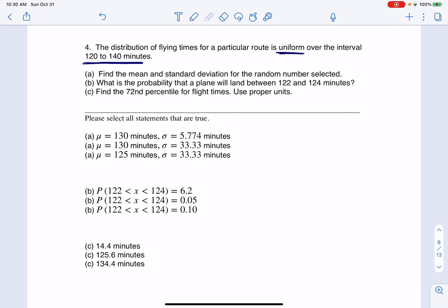So I can spot my variable, flying times, and it looks like the units are minutes. So I'm just going to put that my variable here is flying times. The units are minutes, and I have this buzzword that I'm with a uniform distribution. So I'm going to make sure to follow those rules. So I know x is uniformly distributed. It looked like the min was 120 and the max was 140. And we're going to work through this. We're going to find the mean and standard deviation of this variable, calculate a probability and a percentile.